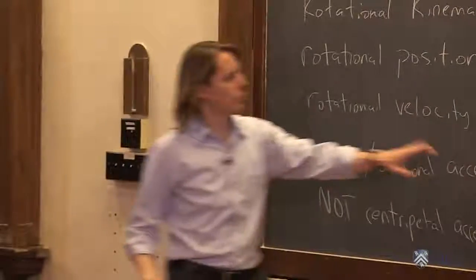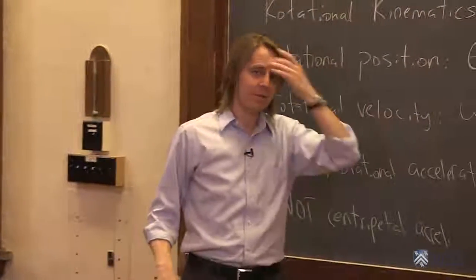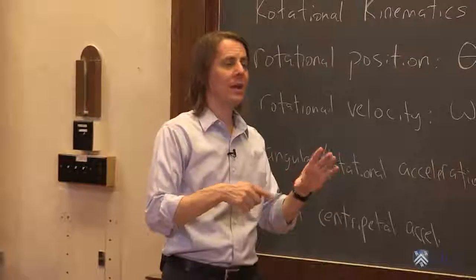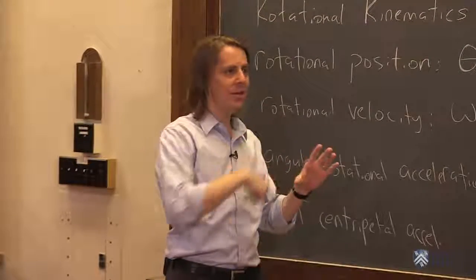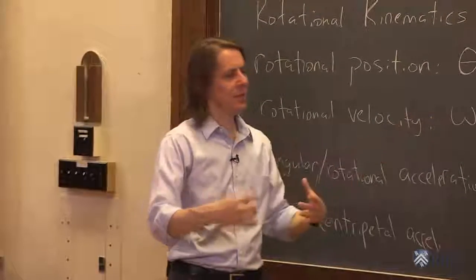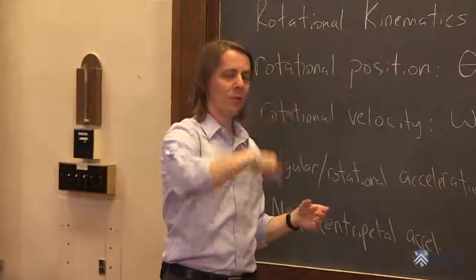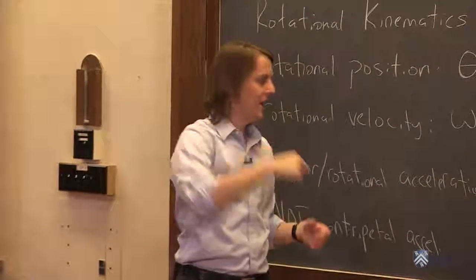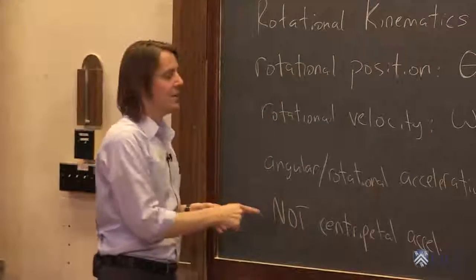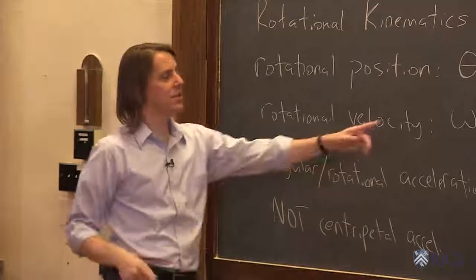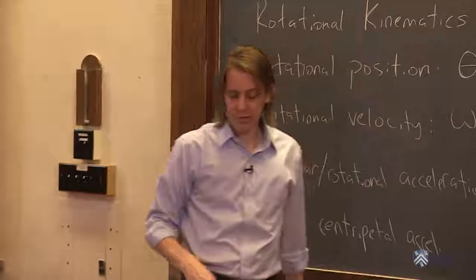Alpha is when your omega is actually changing. Remember, centripetal acceleration was for uniform circular motion—it's going around at a constant speed, so omega is constant. That acceleration describes the motion of a particle going around a circle, pointing inward. This is describing the change in omega. Alpha describes the change in omega.